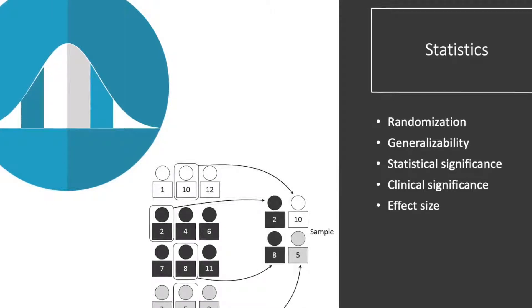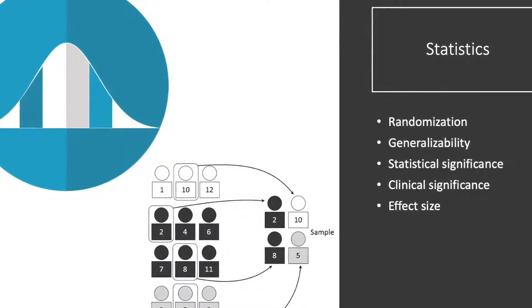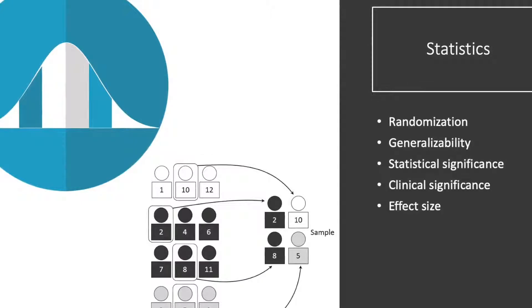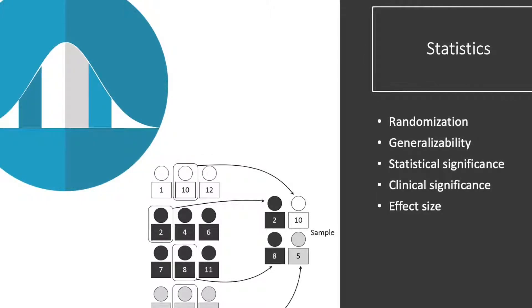Clinical significance is whether the difference was meaningful for those affected. Effect size is how large the differences are. This is usually measured through Cohen's D.